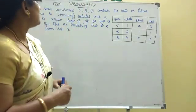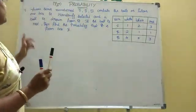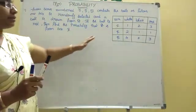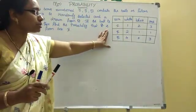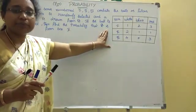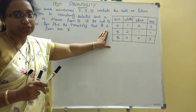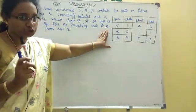Probability 7 marks is the same. This is the Bayes theorem.